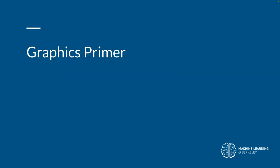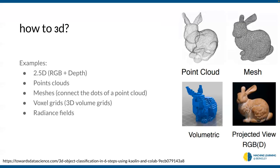A little graphics primer — how do you actually represent 3D data? We can't just use images. One example is 2.5D: instead of just storing pixels you also store depth, how far away the object is. Point clouds are a set of 3D points in space. If you connect those points with edges and faces it becomes a mesh — used in all video games. Another approach is voxel grids, the 3D image equivalent. Lastly, we'll also talk about radiance fields.